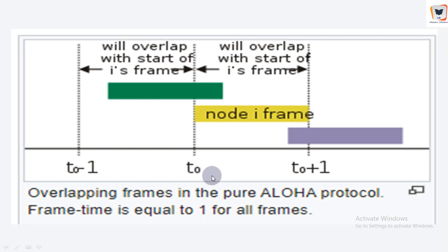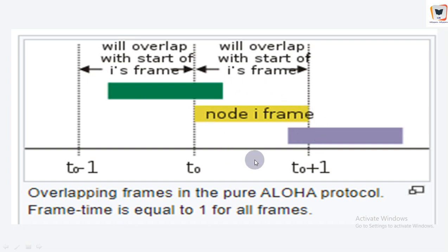In order for this frame to be successfully transmitted, no other nodes can begin their transmission in the interval from T-naught minus 1 to T-naught, and also no other node can begin transmitting in the interval from T-naught to T-naught plus 1, as that would cause a collision. This is how the pure Aloha protocol works.